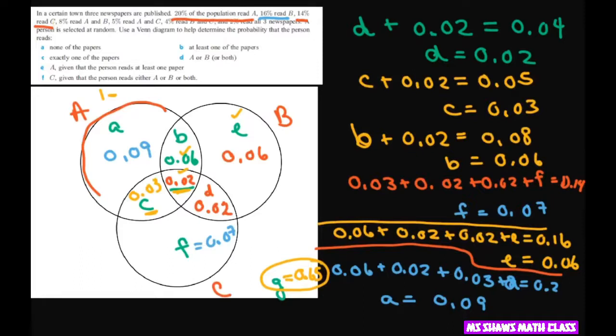Now we can answer our questions. So now the first question is use the Venn diagram to help determine the probability that the person reads none of the papers. So we already did that when we calculated this. So when you add all these numbers up and subtract from 1. You're going to get 0.65.